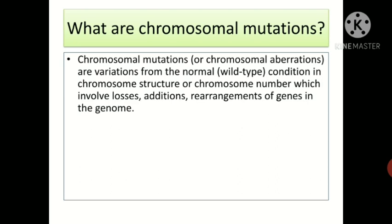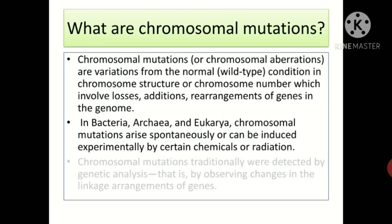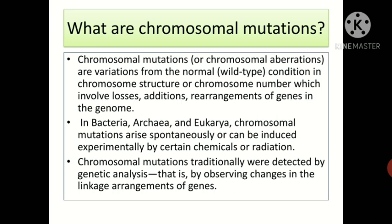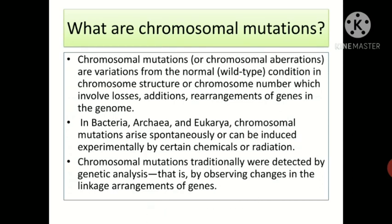Chromosomal mutations involve losses, additions, or rearrangements of genes in the genome. In bacteria, archaea, and eukarya, chromosomal mutations arise spontaneously or can be induced experimentally by certain chemicals or radiation. Traditionally, they were detected by genetic analysis — by observing changes in the linkage arrangement of genes. The study of normal and mutated chromosomes and their behavior is called cytogenetics.